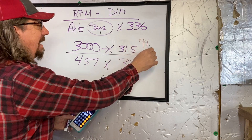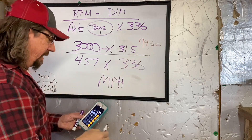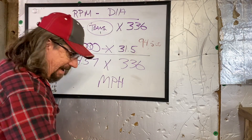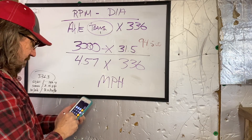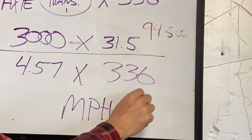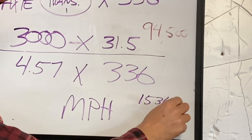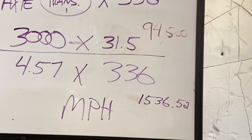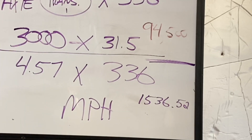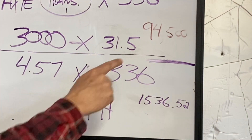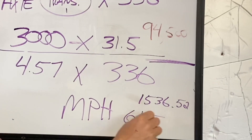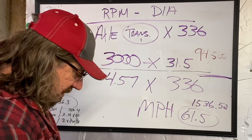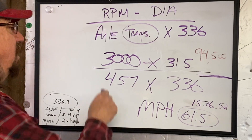So we're looking at 94,500 as our factor. Now, 4.57 times 336 equals 1,536.52. I'm always checking my math in generalities — three times five is 15, so it should start close to 15. We take 94,500 divided by 1,536.52, and we get 61.5 miles an hour. That's exactly accurate. My car, right around 60–62 miles an hour, turns 3,000 RPM.